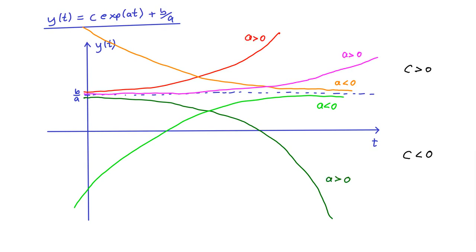The red and pink solutions differ in the magnitude of c — the red solution has a larger c than the pink solution. The magnitude of a influences the rate at which the solution grows or decays, so a solution with a small a would grow slower even if starting from a larger value. The gray solution has a positive but very small a: it starts at a high value on the left but grows very slowly. If you set c to zero, you get the constant solution.